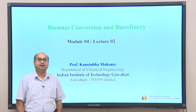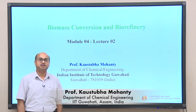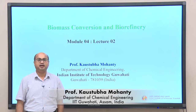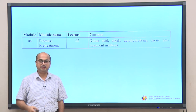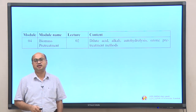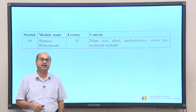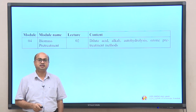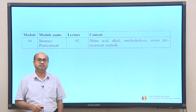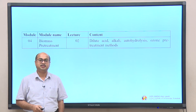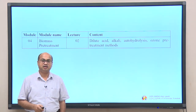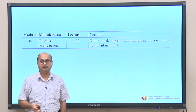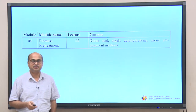Good morning, students. Today is lecture 2 under module 4, dedicated to biomass pretreatment. We have discussed basics in the last class. Today we will discuss some of the most important pretreatment processes such as dilute acid, alkali-based pretreatment, autohydrolysis, ozone-based pretreatment and a few others.